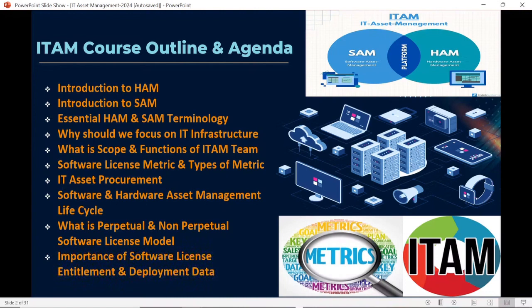The next topic covers the importance of software license entitlement and deployment data. Software license entitlement plays a vital role in preparing an effective license position, and software deployment is another key aspect needed for the ELP. In order to prepare the Effective License Position, both entitlement data and software deployment data are essential — without these two data sources you won't be able to determine if your organization is compliant or non-compliant.